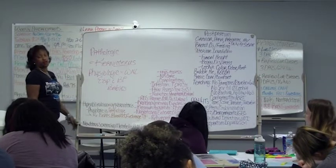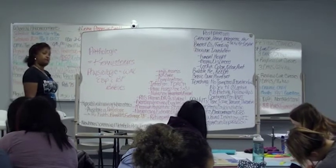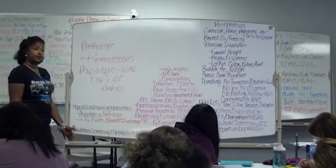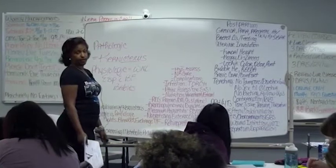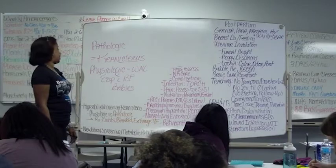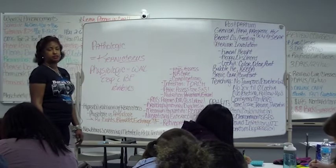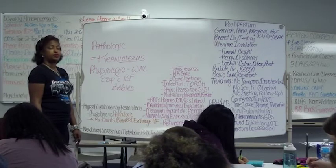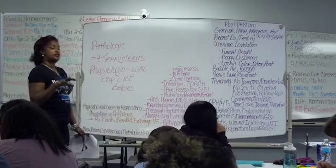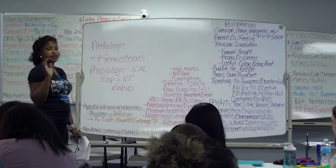Pathologic jaundice very often occurs in the first 24 hours and is symbolic of a liver problem. This baby needs bilirubin lights or a bilirubin blanket — billy blanket or billy lights. Pathologic requires bilirubin lights or bilirubin blanket. The blanket is essentially a blanket of lights wrapped around the baby.